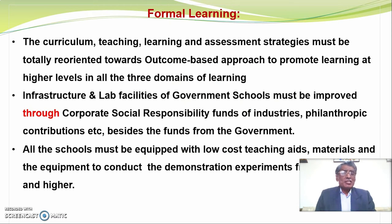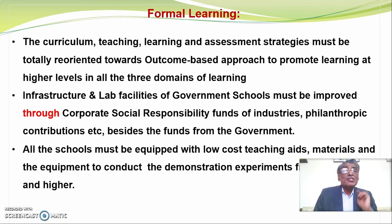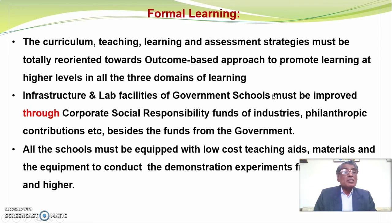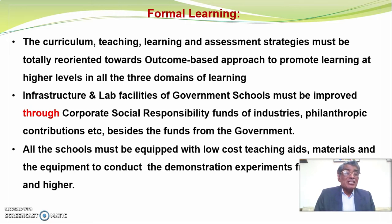We must consider both formal learning and non-formal learning in science education. When you consider formal learning, the curriculum, teaching, learning and assessment strategies must be totally reoriented towards an outcome-based approach, to promote learning at higher levels in all three domains — cognitive, psychomotor and affective. Infrastructure and lab facilities of government schools must be improved through corporate social responsibility funds of industries, philanthropic contributions, and so on, besides funds from the government. All schools must be equipped with low-cost teaching aids, materials and equipment to conduct demonstration experiments from ninth class onward. If schools are able to equip themselves with labs wherein students can perform experiments, at least group experiments by themselves, that would be a wonderful thing.